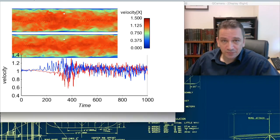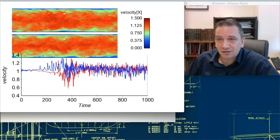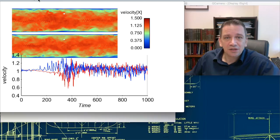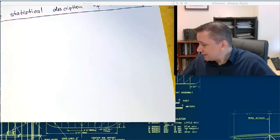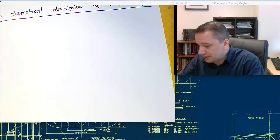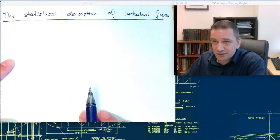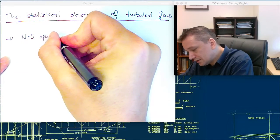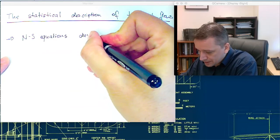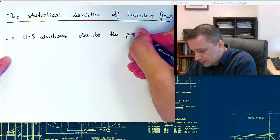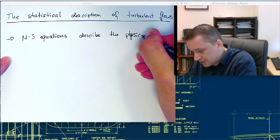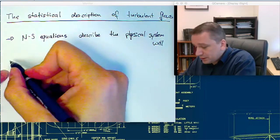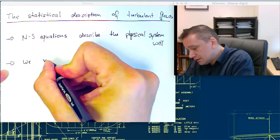And that is the reason why we need to find now tools, mathematical tools, to address this issue: that these flows are, even though well described with the Navier-Stokes equation, you need to find other ways to analyze these flows. So, that's our conclusion, essentially: you need to find statistical means, statistical descriptions of turbulent flows. Even though the Navier-Stokes equations describe the physical system well, we need statistical tools to analyze the flows.